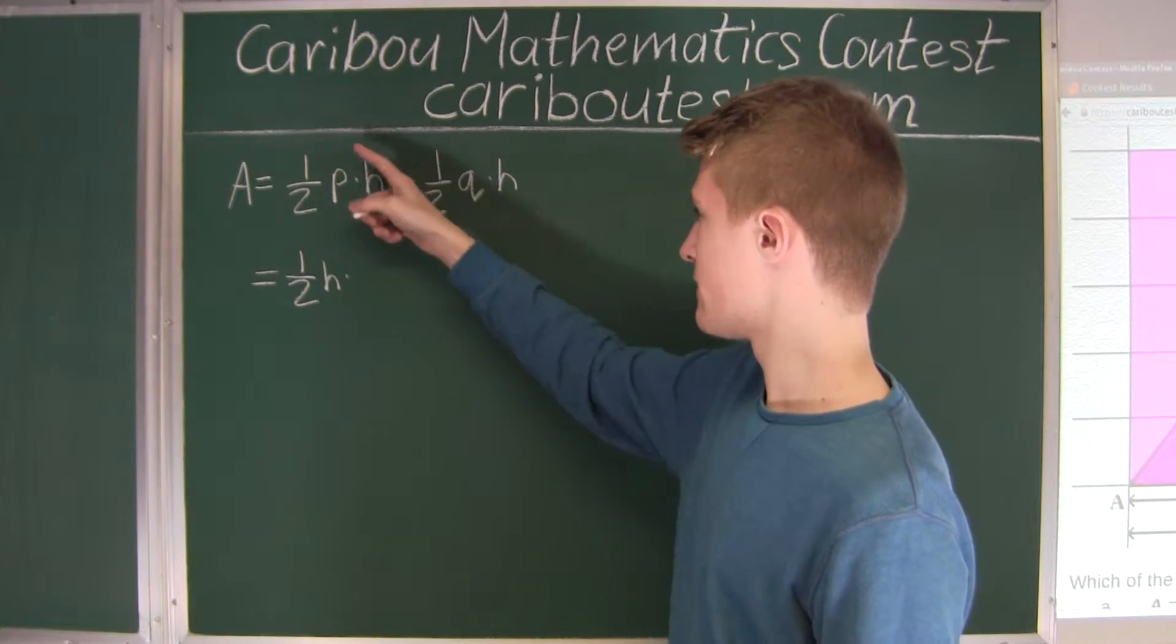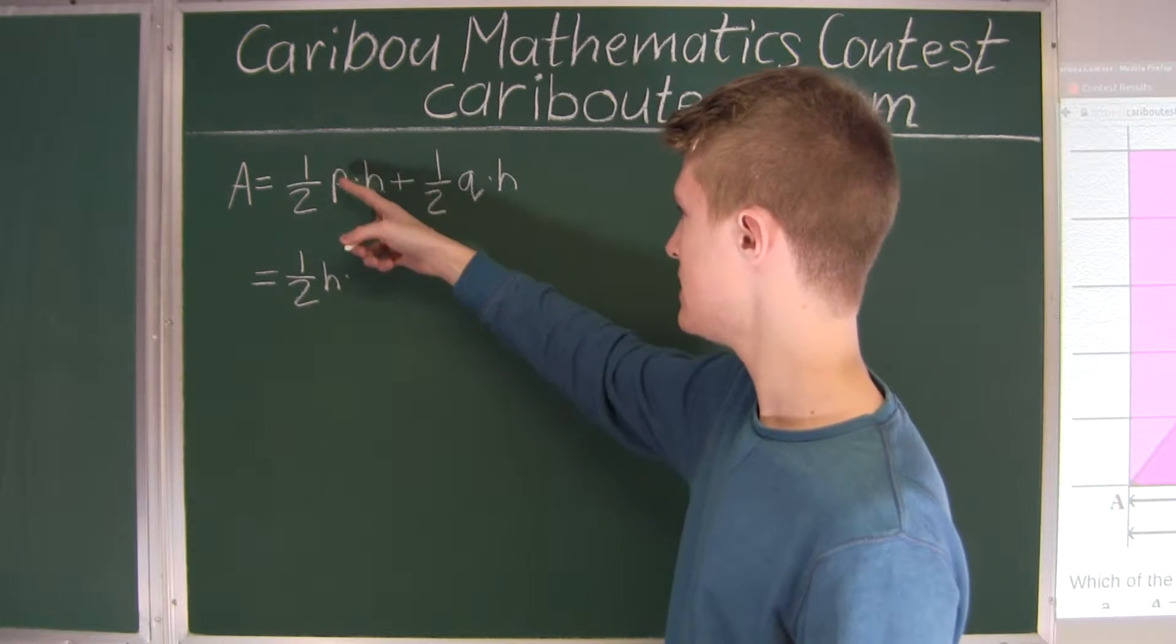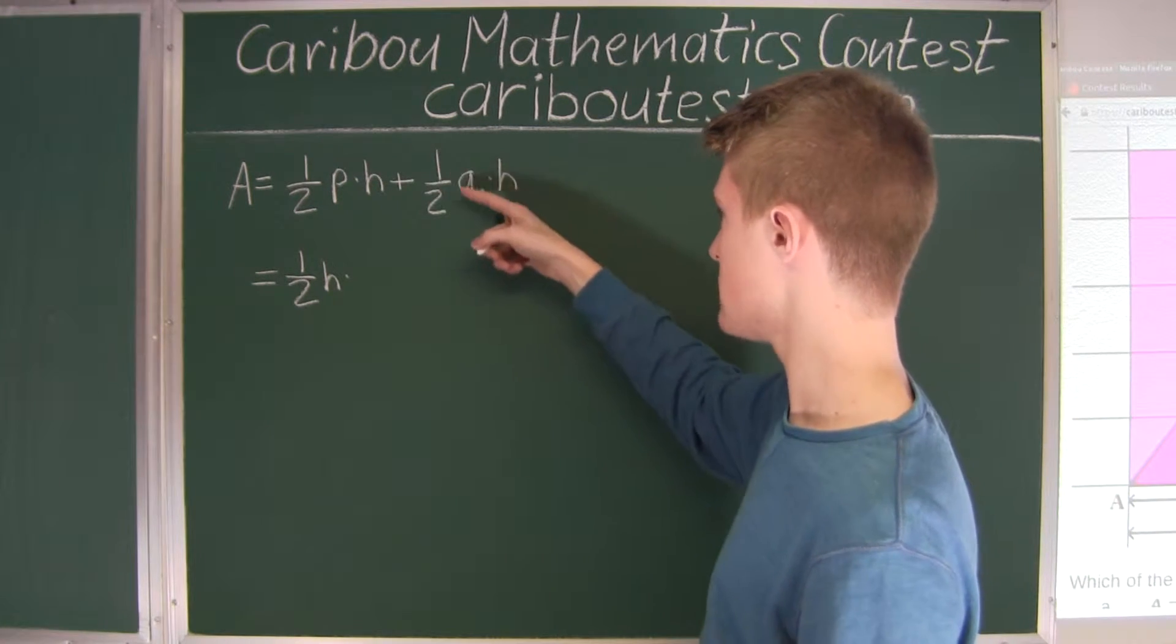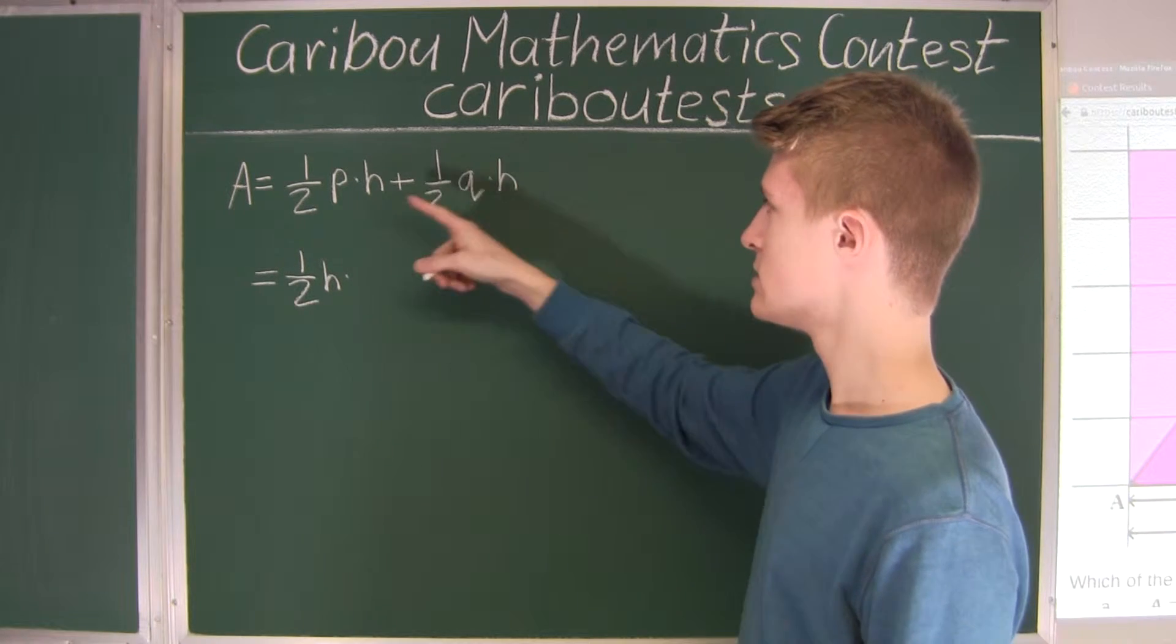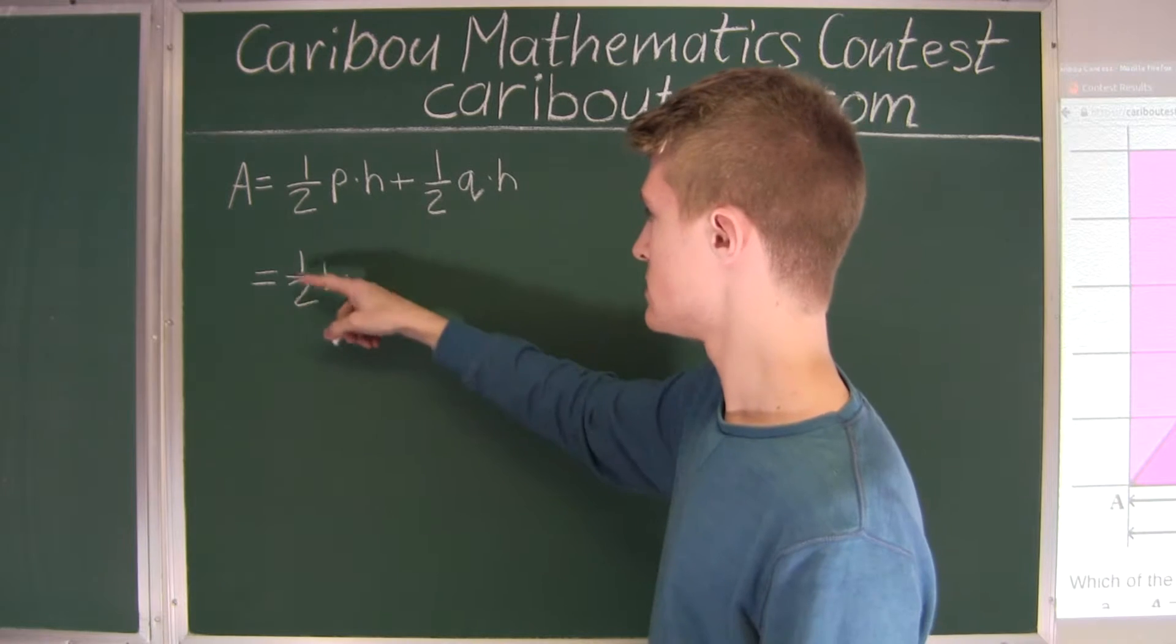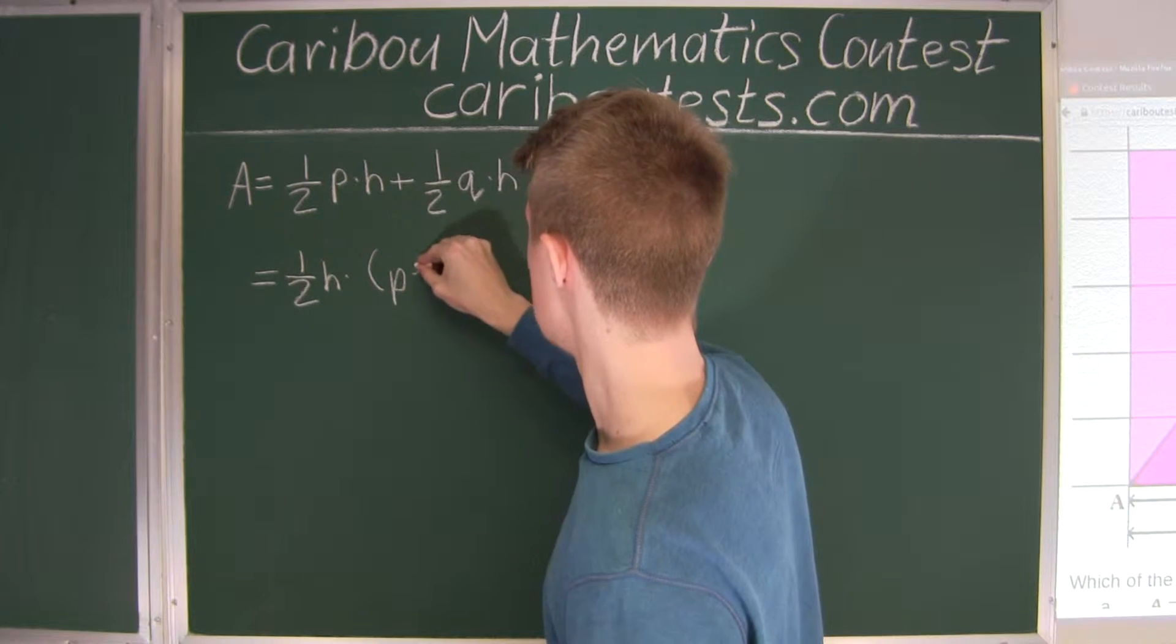Now, if we would divide this term by 1 over 2 H, all we would have left would be P. And here, if we were to divide that by 1 over 2 H, we would just have Q left. So we would have P plus Q. So this multiplied by P plus Q.